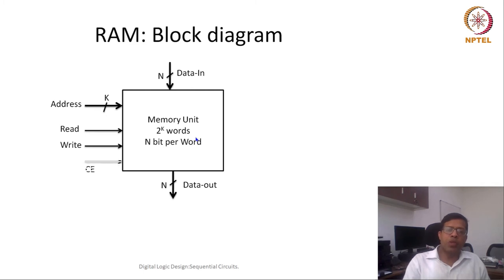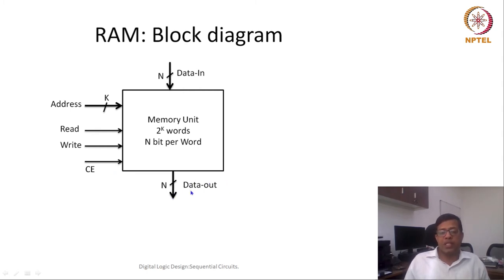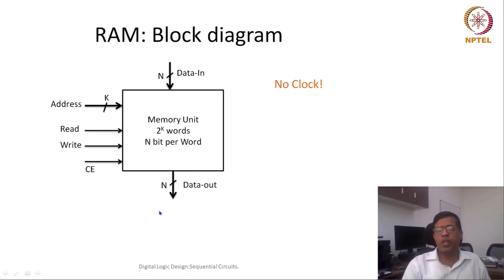There can be an additional optional input: chip enable or circuit enable. If this enable is 1, it performs its functionality. If it is 0, the data output should be high impedance — there should be no data output. Note that there is no clock shown here, so we are not considering this RAM as a synchronous sequential design; it is only a sequential design.